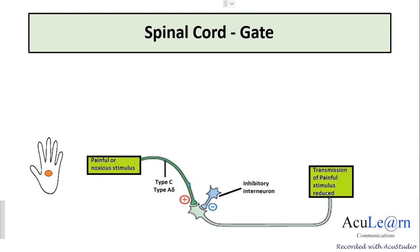There exists a pain gate in the spinal cord, which is the pain inhibitory complex in the dorsal horn of the spinal cord, which blocks the pain signals at the entry point to the spinal cord. These are the inhibitory interneurons and they release the endogenous opioid peptides.